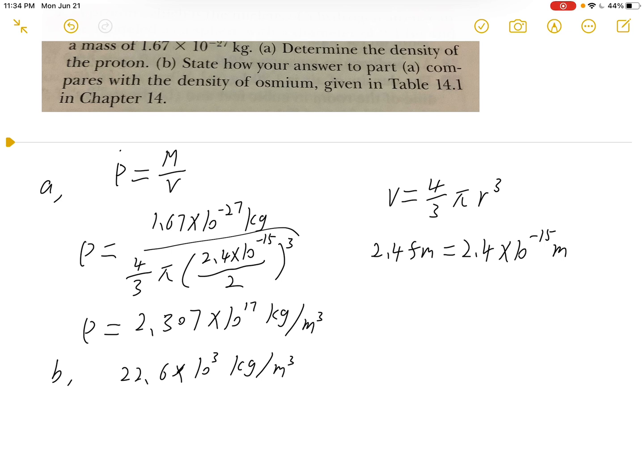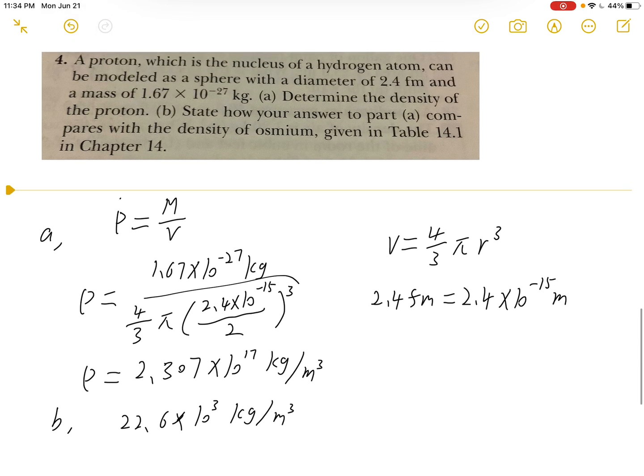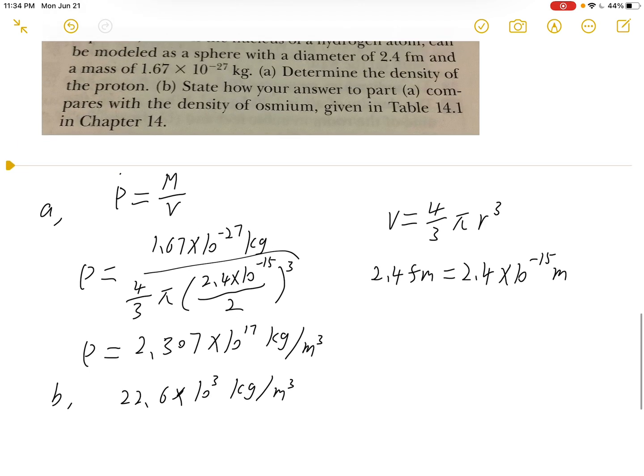So if we compare it, we know that the density of this proton is much greater than the density of osmium. So that's going to be the answer for part B.